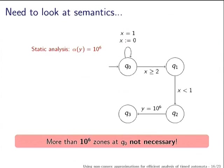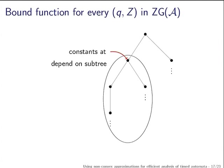But static analysis is also not enough. In this example, by static analysis you would associate 10^6 to Y because Y is not reset. But careful observation shows that Q2 is not reachable at all — you are asking X to be greater than or equal to 2 here, and less than 1 there, so the automaton can never come to Q2. So instead of associating a bound function to every state Q, we want to associate a bound function to every (Q, Z) node in the zone graph.